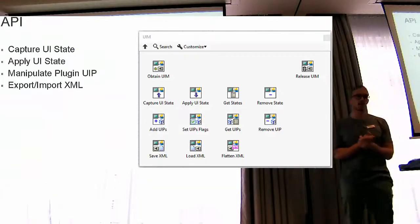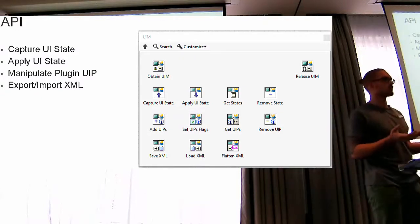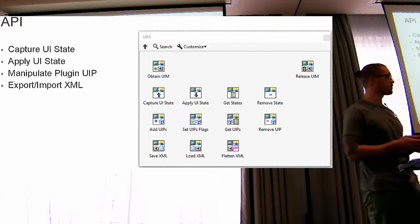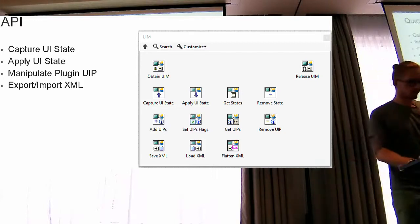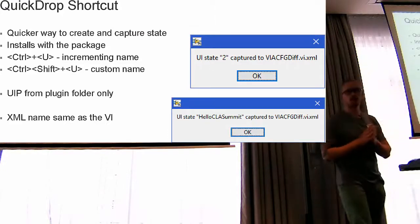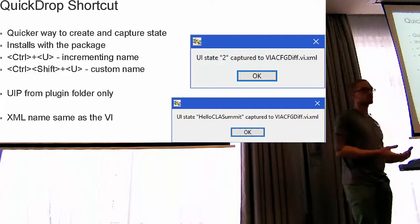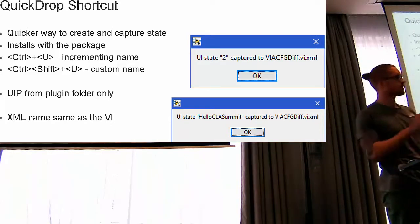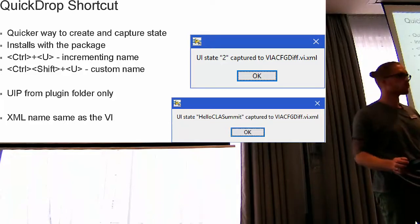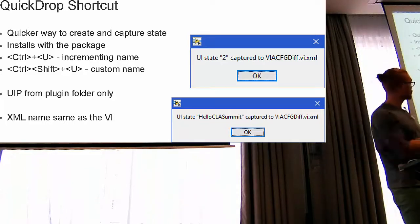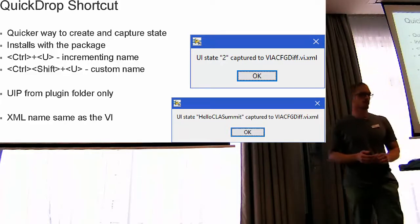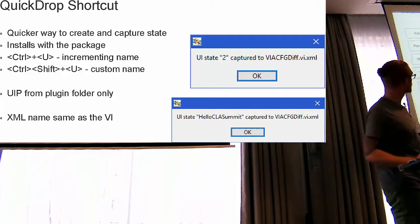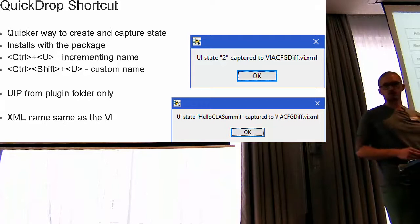The tool also has an API that does the same things as the tool does, so you can do all of this programmatically as well. And if the tool feels like too many steps — open the menu, capture, name it — you can use the Ctrl+U or Ctrl+Space shortcut, which captures the state of a VI for you using the default plugins available in the tool.